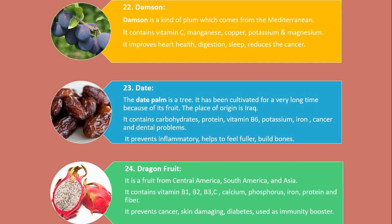Number 24. Dragon Fruit. It is a fruit from Central America, South America and Asia. It contains vitamin B1, B2, B3, C, calcium, phosphorus, iron, protein and fiber. It prevents cancer, skin damage, and diabetes, and is used as an immunity booster.